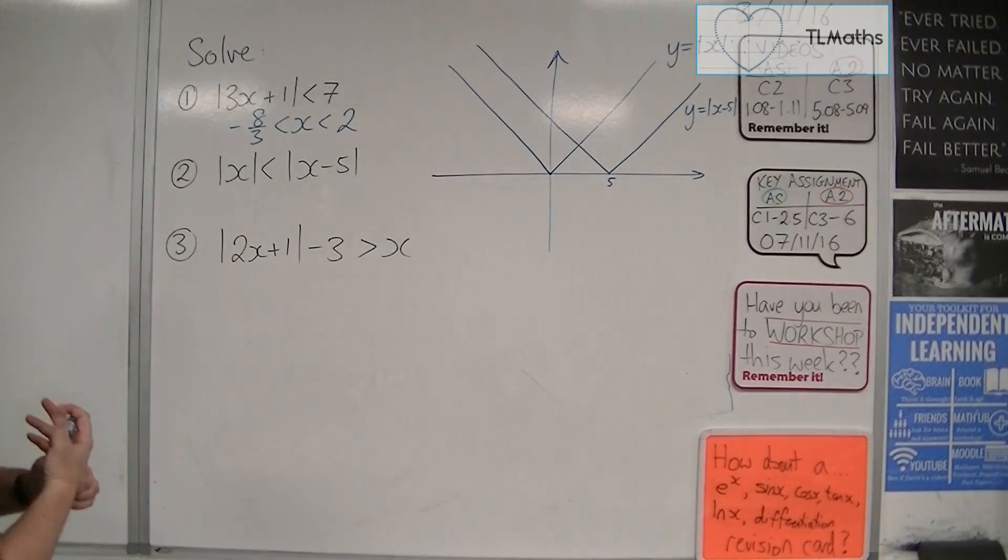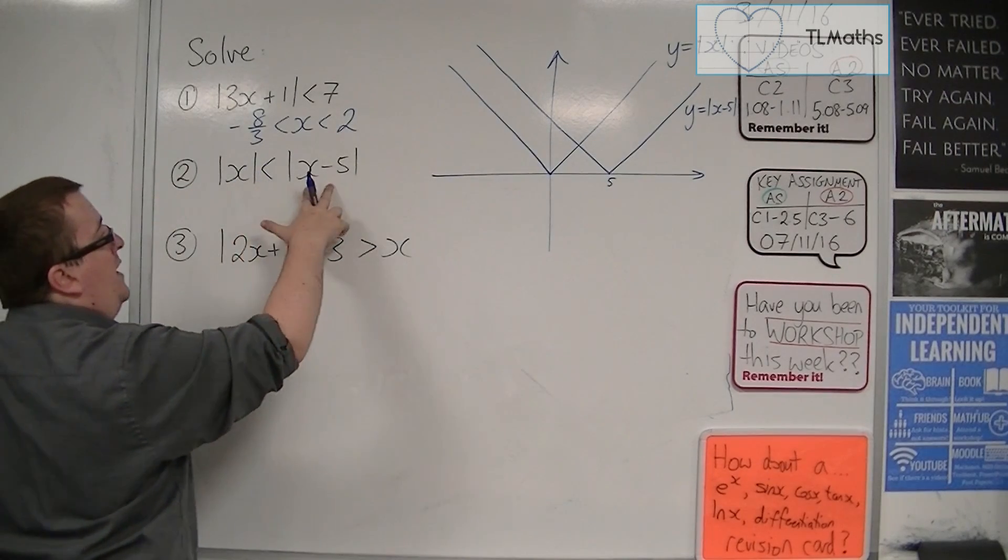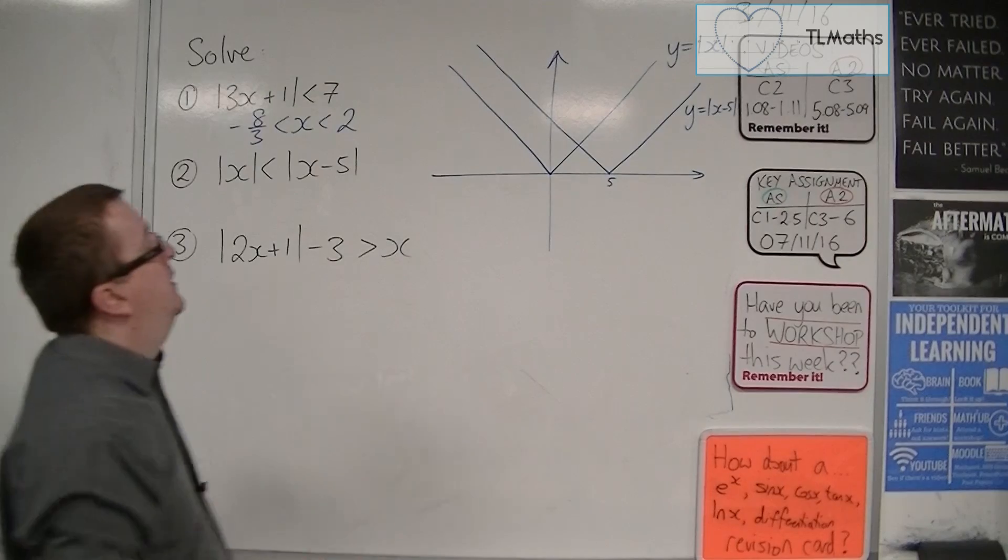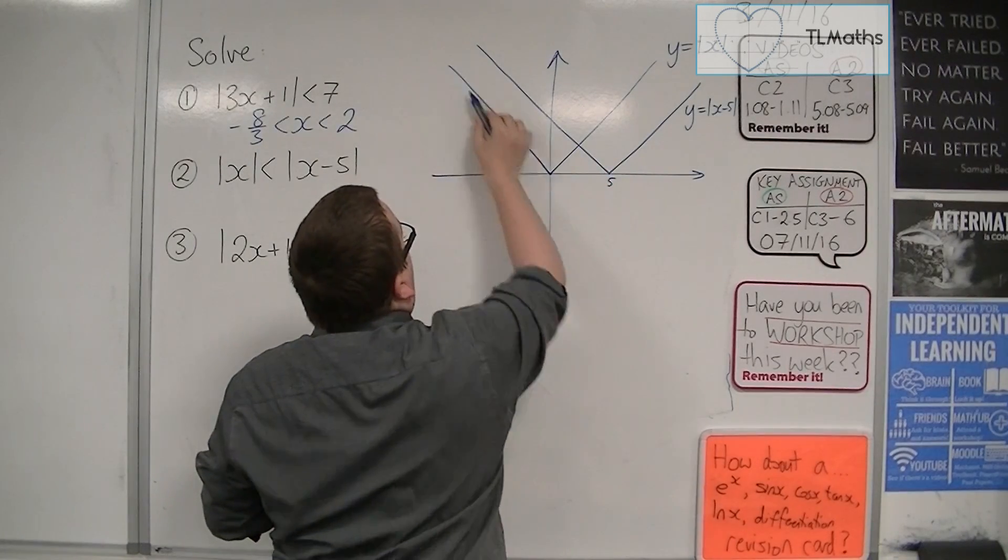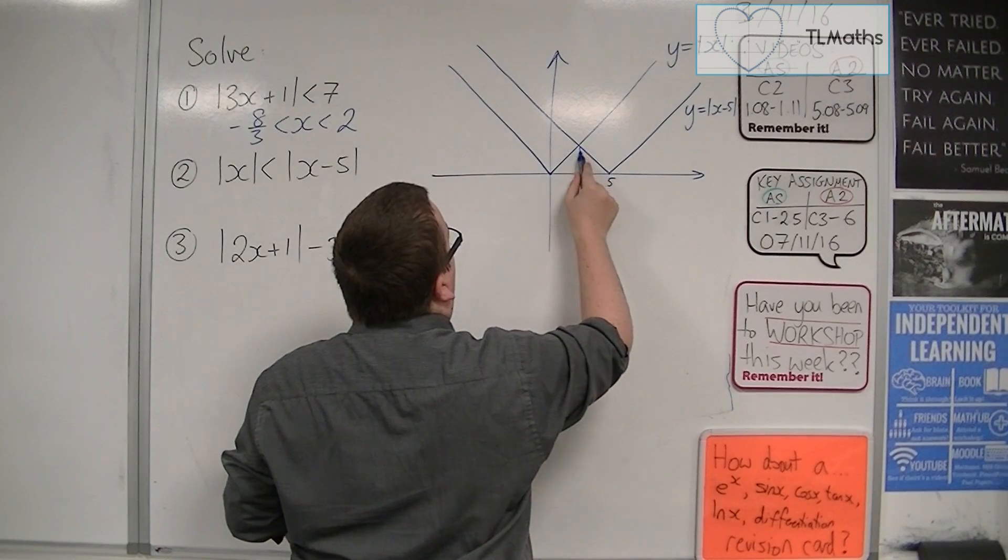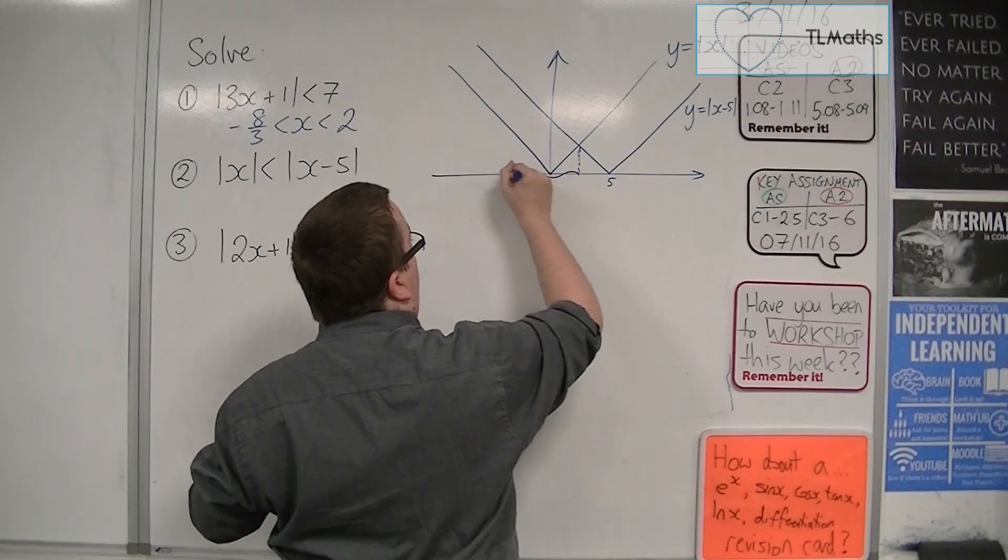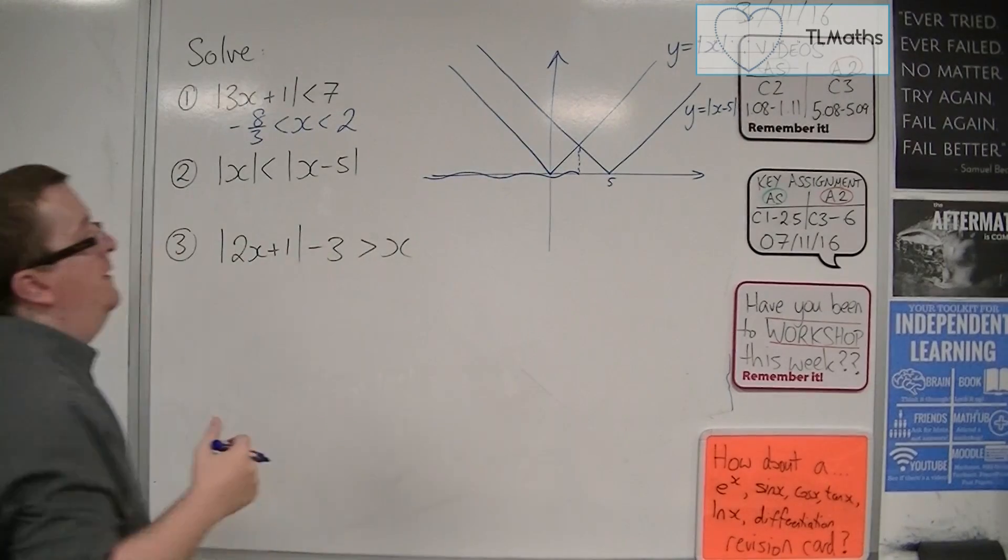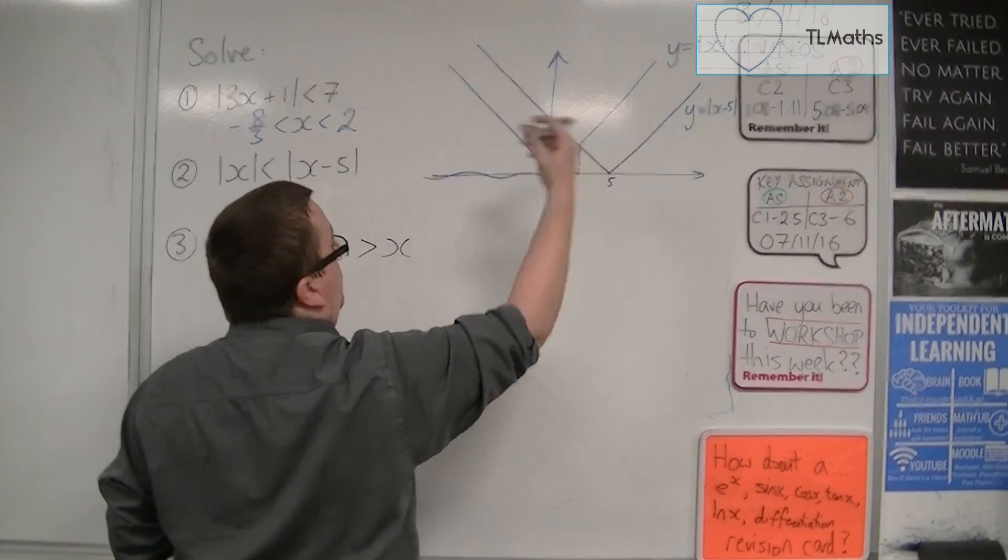So what is it asking? Where is y equals mod x below y equals mod x minus 5? So it's below it here. This whole region here. So we need to find that value. And then we look at this region. That is where mod x is less than this one, where it's below.